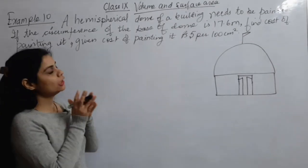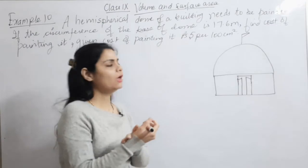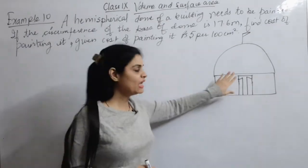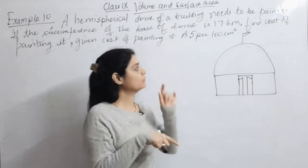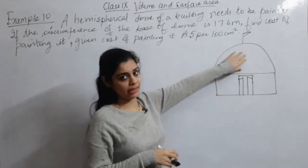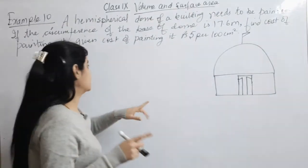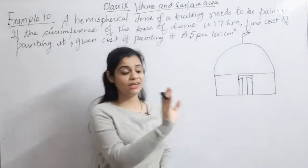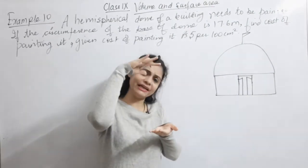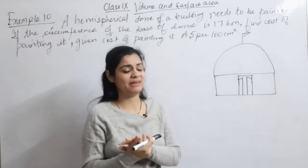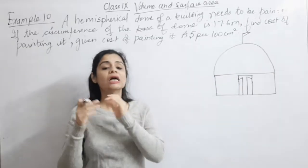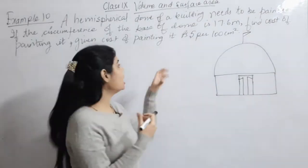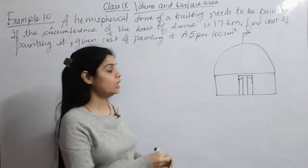The last example before Exercise 13.4 is Example 10: A hemispherical dome of a building needs to be painted. We have to paint only the curved top portion, not the base attached to the building. So we need the curved surface area. The circumference of the base of the dome is given as 17.6 m, from which we find the radius.